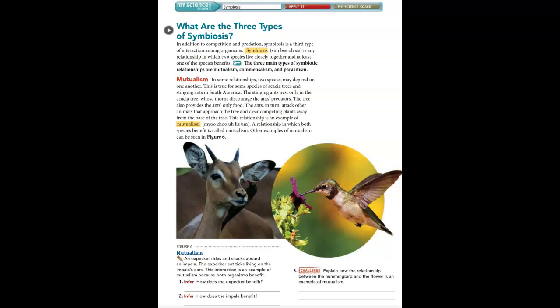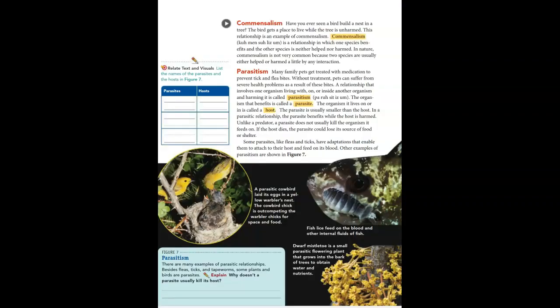We also have commensalism. Have you ever seen a bird build a nest in a tree? The bird gets a place to live while the tree is unharmed. This is an example of commensalism — a relationship in which one species benefits and the other is neither helped nor harmed. In nature commensalism is not very common because two species are usually either helped or harmed a little by any interaction. So in commensalism, one thing benefits but the other is just there — nothing happens to it.